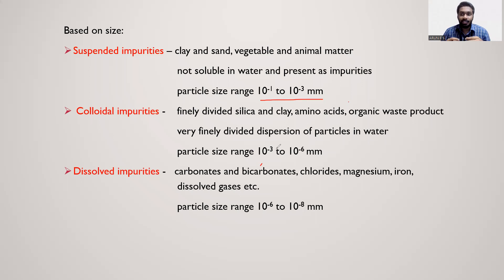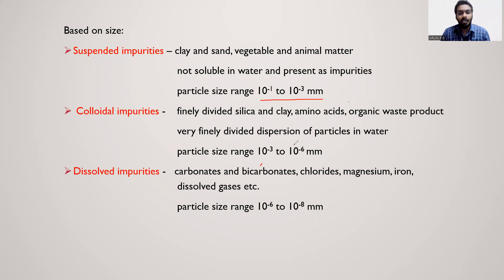Colloidal impurities are scattered throughout the water. A very finely divided dispersion of particles in water — for example, finely divided silica, clay, amino acids, and organic waste products. The particle size range is 10⁻³ to 10⁻⁶ mm.